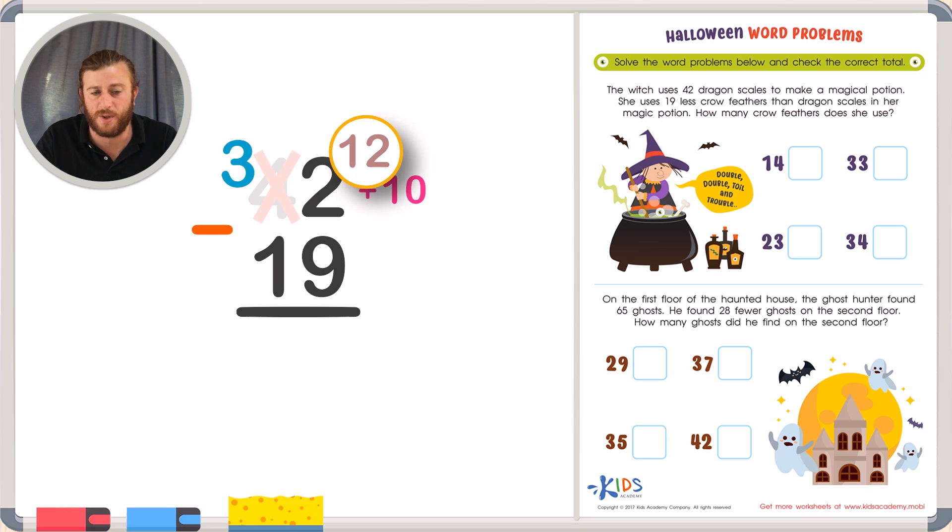Now we can just subtract the ones place. 12 minus 9. 9, 10, 11, 12. 12 minus 9 is 3.